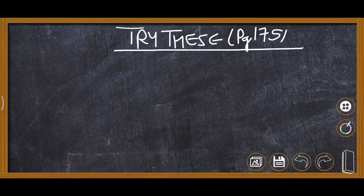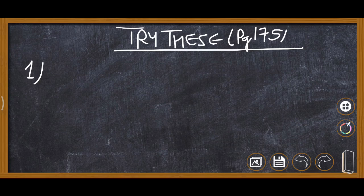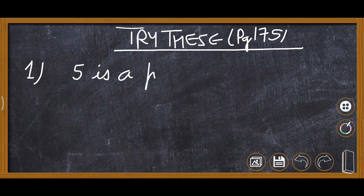So let's do it. This is try these page number 175, next try these in which first question is given: is 5 a positive rational number? So here you can see 5 is a positive rational number.